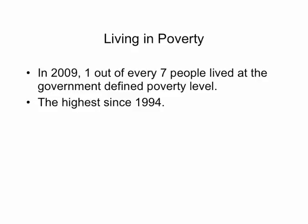Living in poverty. The government likes to keep track of the percentage of people in our country who actually live around the poverty line, and that's determined by the government. In 2009, one out of every seven people lived at the government-defined poverty level — that is the highest since 1994.